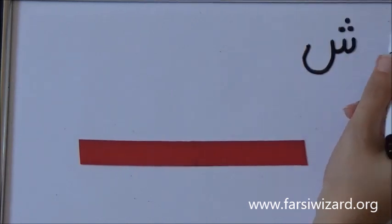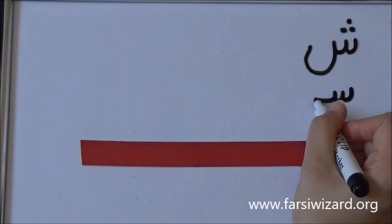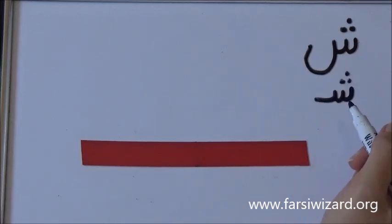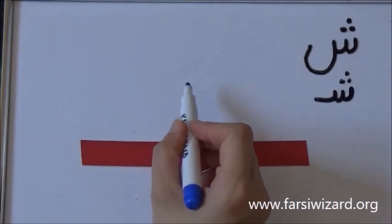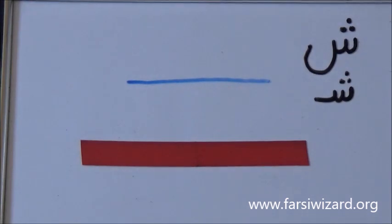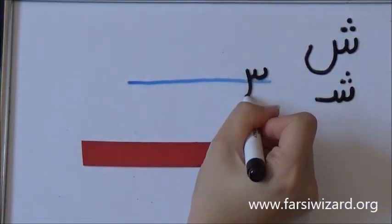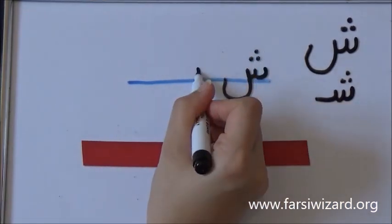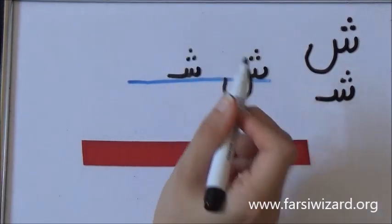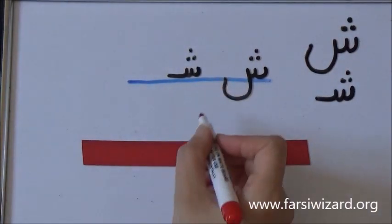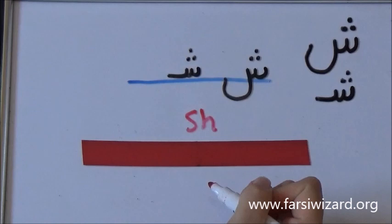Now the next letter is written exactly the same way. The only difference is now you will have to put three dots on top of it. So you can see that it's really similar to sin. And that is why the name of the letter rhymes with sin. It is shin.